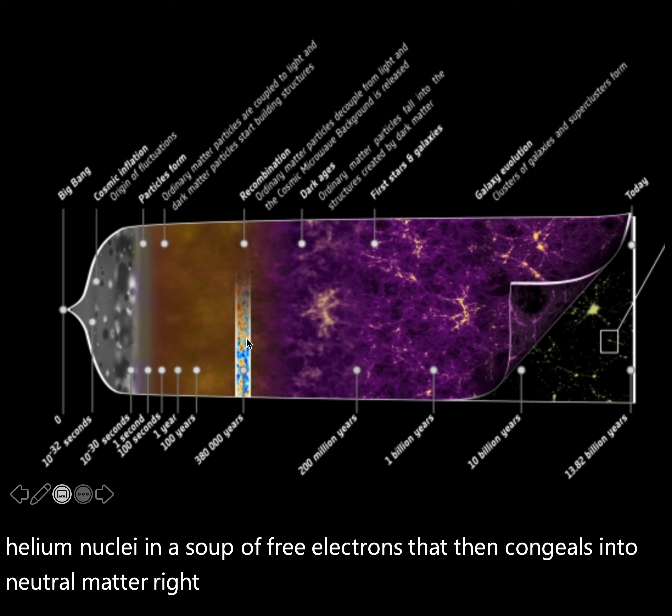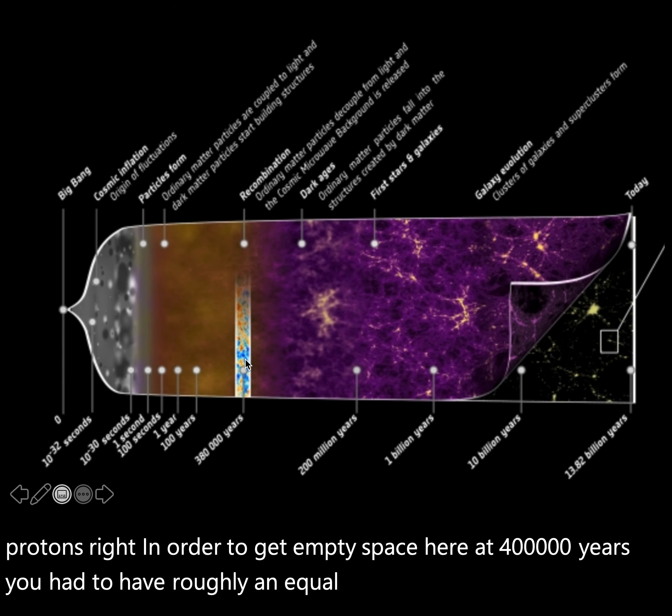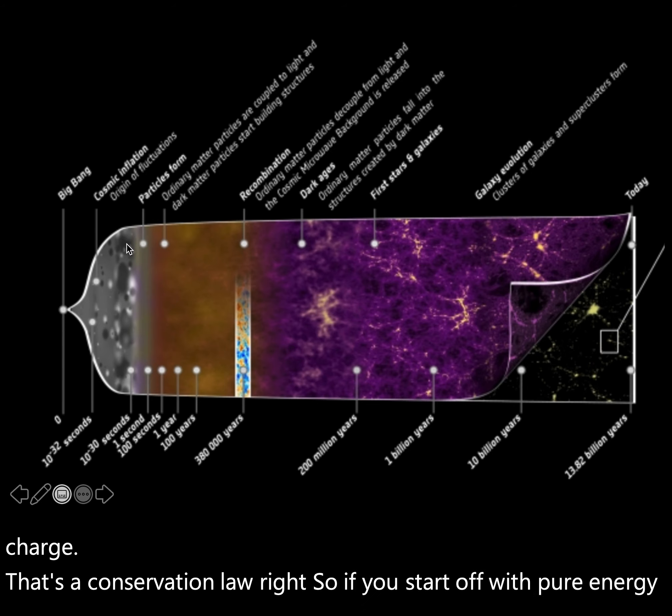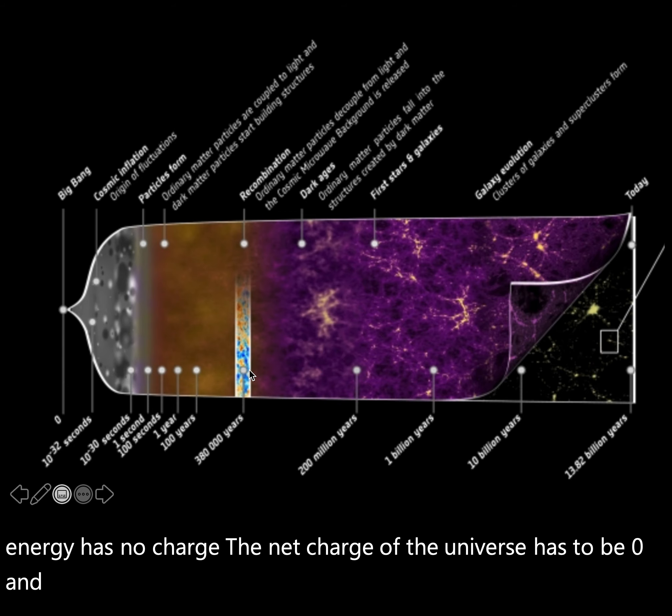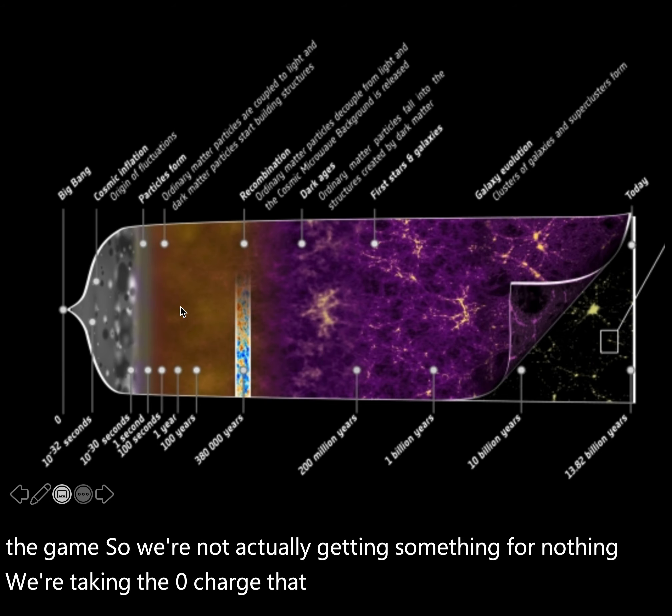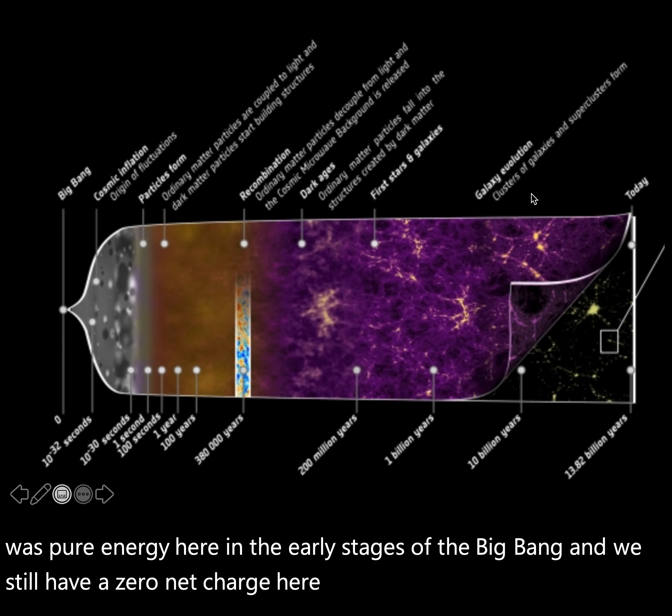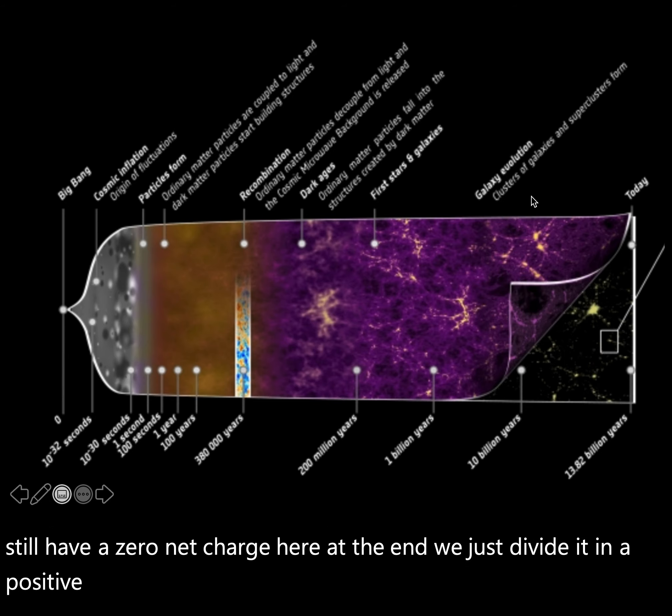And then some of those protons fused together and made neutrons and helium nuclei, and that's as far as it could go in the temperature, because remember it's cooling down this whole time. So we start off with pure energy. Then that energy congeals into fundamental particles. Then fundamental particles get together and make some composite particles. And then at the very end, we have these hydrogen and helium nuclei in a soup of free electrons that then congeals into neutral matter. Now, it shouldn't be surprising to you that it worked out that you have an equal number of electrons and protons. In order to get empty space here at 400,000 years, you had to have roughly an equal amount of positive and negative charge. Well, that's a conservation law. So if you start off with pure energy, energy has no charge, so the net charge of the universe has to be zero.